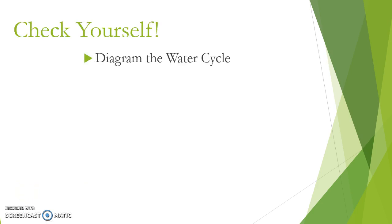Go ahead and on your sheet right now, I want you to diagram out the water cycle. Draw pictures for important organisms or structures found in the water cycle, and add arrows to show the movement of water, but also label what's going on and what part of the water cycle you're looking at. Be sure to include evaporation, condensation, precipitation, transpiration, absorption, and runoff.